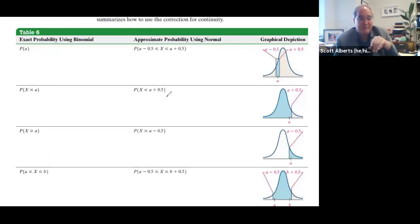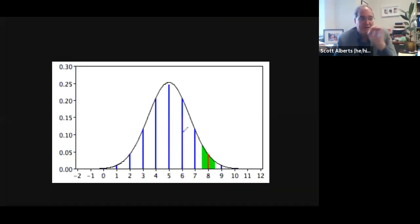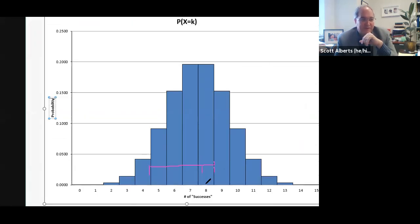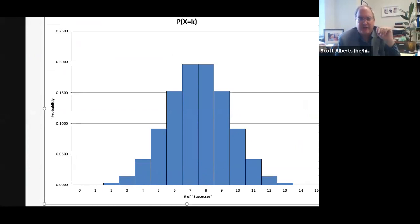For a one-directional calculation, we add 0.5 on the top or subtract 0.5 on the bottom as appropriate. For a range, we subtract 0.5 on the bottom and add 0.5 on the top. The best way to remember this is to draw a quick picture: if you mean 8, you go from 7.5 to 8.5. If you want from four to eight, you go from 3.5 to 8.5 to capture all that area — just like the rectangles in the histogram do automatically. That's all to explain how we'll calculate this. In the next part of the video, I'll show how to do this in a spreadsheet.